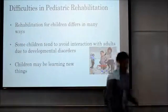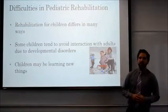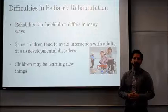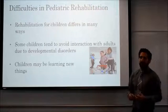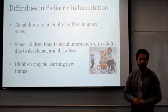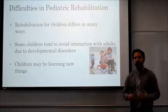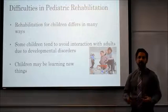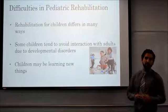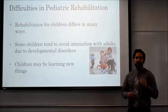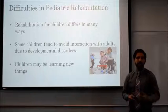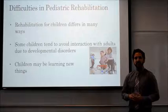I'm going to talk about the difficulties that pediatrics face while doing rehabilitation for children. Rehabilitation for children differs in many ways from adults, mainly in the fact that children are not the same size as adults and do not share the same limb sizes. This becomes troublesome for an adult to demonstrate on a kid how to do certain movements. Some children also tend to avoid interactions with adults who may be the physical therapist or sometimes even the parents, due to developmental issues such as autism.